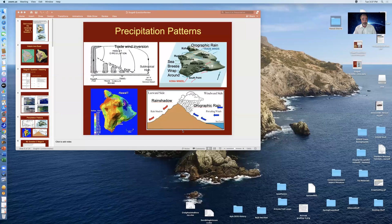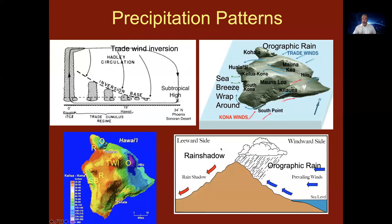Hi, my name is Ron Dorn and the purpose of this video presentation is to explain the Stage B Hawaii question number two dealing with precipitation patterns. I'll go to screen share and organize the presentation via a PowerPoint.